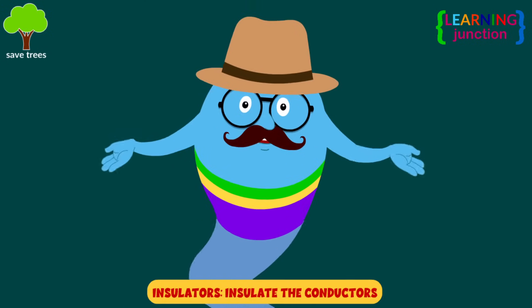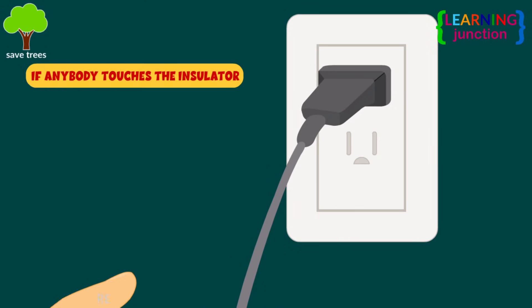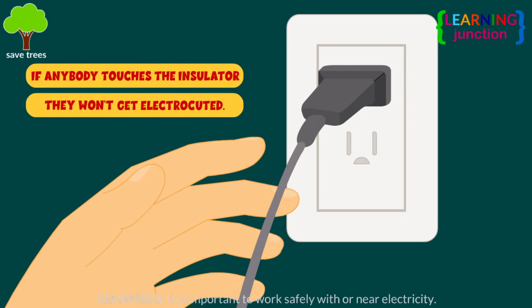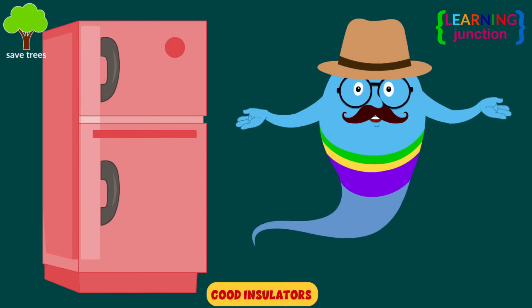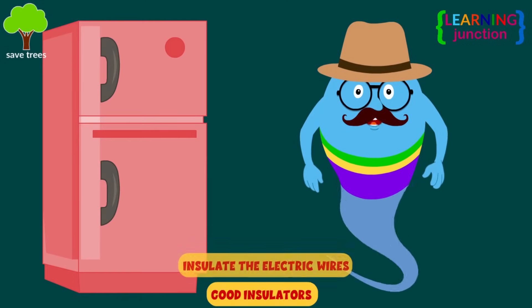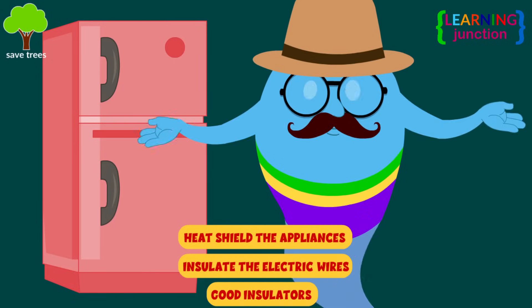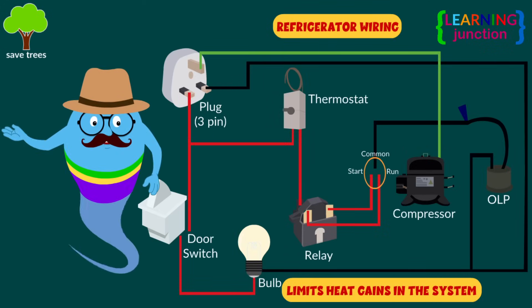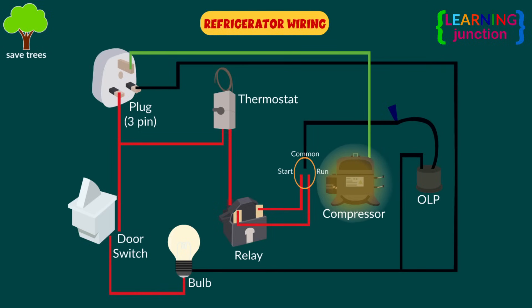Insulators are mostly used to insulate the conductors, so if anybody unconsciously touches them, they won't get electrocuted. See this refrigerator? You need good insulators to insulate the electric wires and heat shield the appliances. Insulation performs a vital role in limiting heat gains in the system, ensuring that the compressor load does not become excessive.